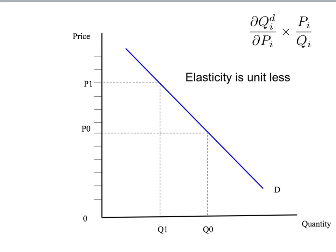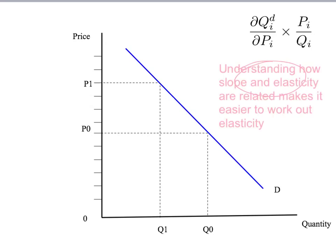In summary, we use the elasticity of demand rather than the slope of the demand curve when thinking about how quantity changes for a change in price because elasticity is unitless — and that is really important, particularly when making comparisons between different countries that use different currencies. Secondly, understanding how slope and elasticity are related makes it easier to work out elasticity. In particular, we've seen the examples of a perfectly elastic demand curve and a perfectly inelastic demand curve.